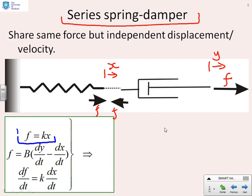For the spring, I've got f equals kx. For the damper, I've got f equals b into dy dt minus dx dt, because there's a relative movement between the two ends. I can use the same trick that was indicated in the previous video. I can now write df dt equals k dx dt. And the reason I've done that is because in order to solve this, I'm going to take this dx dt here, and I'm going to put it in here.